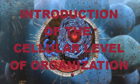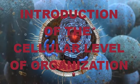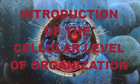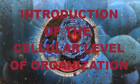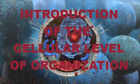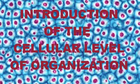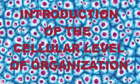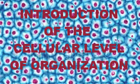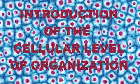A cell consists of three parts: the cell membrane, the nucleus, and between the two, the cytoplasm. Within the cytoplasm lie an intricate arrangement of fine fibers and hundreds or even thousands of minuscule but distinct structures called organelles.